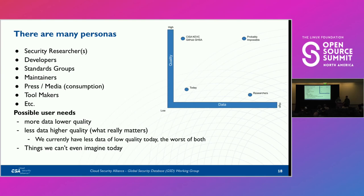One of the reasons we call it out for the press is, for example, Log4Shell was really huge. But if you're a member of the press with really tight deadlines, having a prose description that actually explains in layman's terms what this thing is — that's something we can support with a more flexible data format with the GSD.